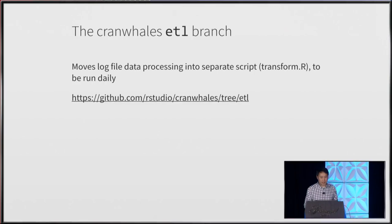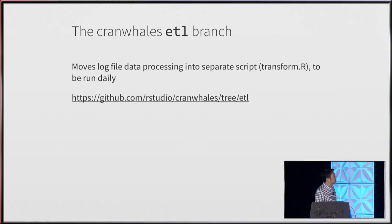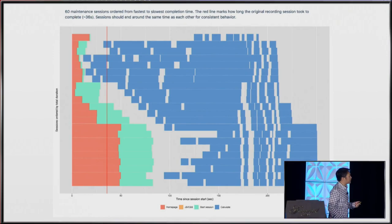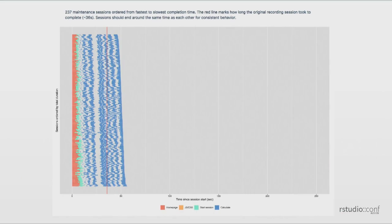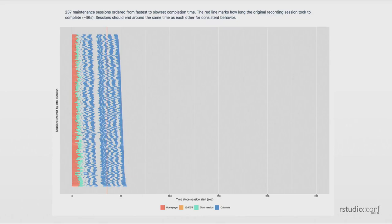I've modified Cranwhales to use this approach — the repo is RStudio/Cranwhales with a branch called ETL that does some processing ahead of time. Looking at the original performance versus after just that one change: overall time to completion dropped from a max of 250 seconds, average well north of 200, down to around 60 seconds. The size of each individual block has gotten smaller and more consistent — more predictable, more understandable user wait times. We're looking tremendously better.